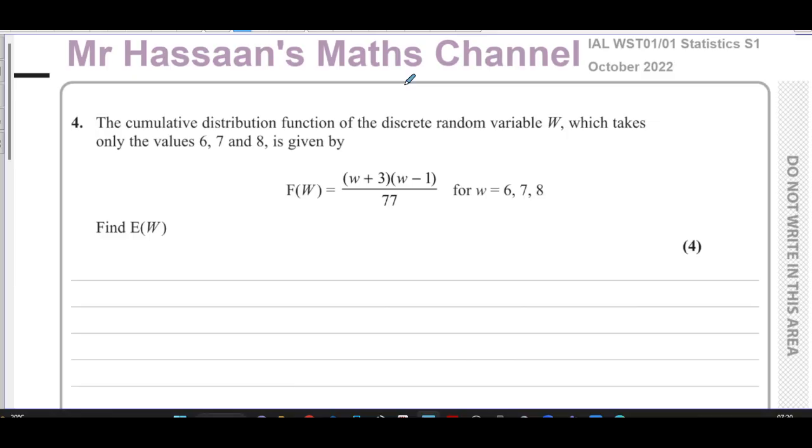It means the outcomes of a random experiment can be the number 6, 7, or 8. We don't know what the experiment is, it could be anything. We don't need to know what it is, but the outcomes of the experiment can either be the numbers 6, 7, or 8. Those are the only three outcomes.